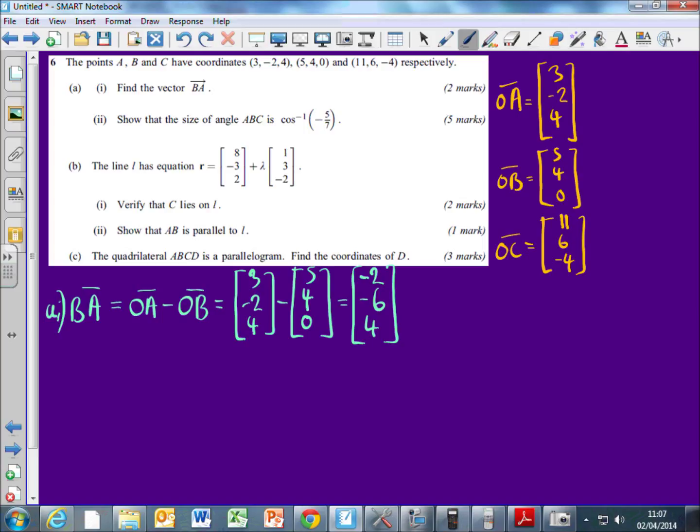Okay. So the next thing is, we want to show that the angle ABC is the inverse cos of minus 5 over 7. Now whenever you're talking about angles, when you're talking about vectors, your mind should immediately jump to what? The dot products. Okay. So if I want to find the angle ABC, then what am I going to want to dot together?